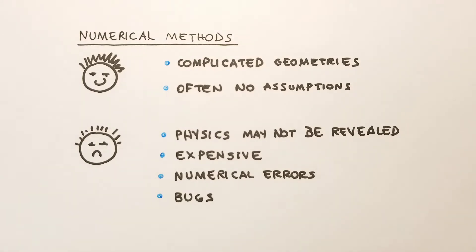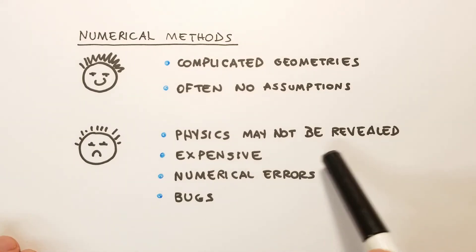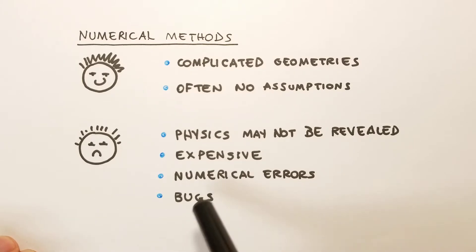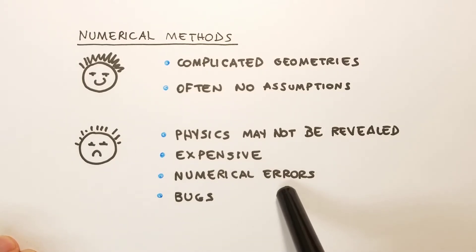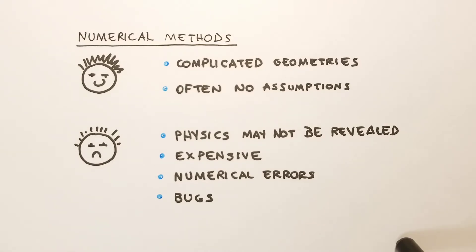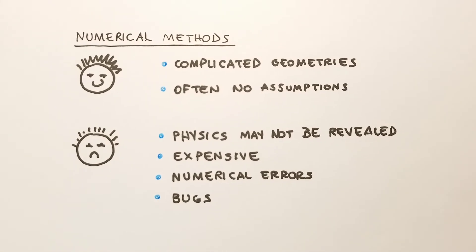On the other hand, we also have disadvantages, because the physics may not be revealed. The output of a computer simulation is a series of data, so we have to interpret them somehow. Often the computer simulation can be expensive, and we can have numerical errors. And sometimes, if we don't code it well, our software can contain some bugs or errors in the numerical programming.